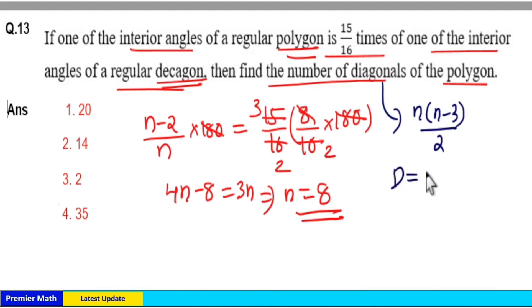So, the number of diagonals is equal to 8 × (8-3)/2, which equals 8 × 5/2, which is equal to 20. Therefore, the number of diagonals of an 8-sided polygon is 20. Option 1 is your answer.